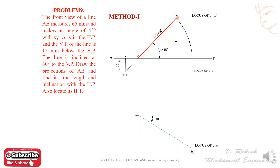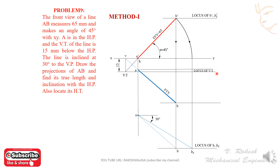Now join a and b. This is the b' line — b is on the opposite side of the b' projector. Join a and b — this is the final top view. Now put the compass parallel to ab and move it. This is the b point, this is the new a point. This is the final top view line — this is ab.